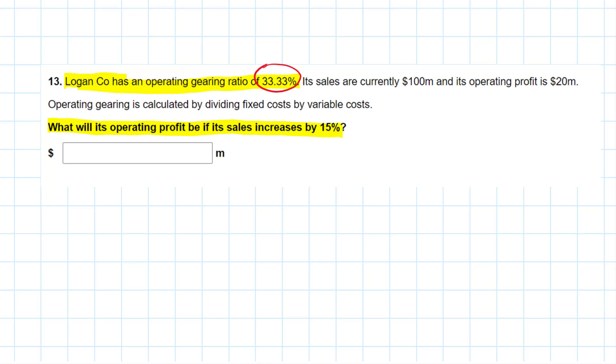You can do it different ways. There's no accounting standard about that. Let's read more. Hopefully, we get more info on that. Sales are currently 100 million. Operating profit is 20 million. Now, they tell us operational gearing is calculated by dividing fixed costs by variable costs.